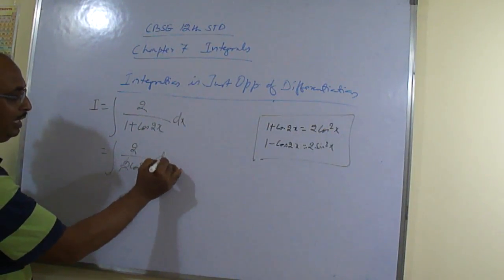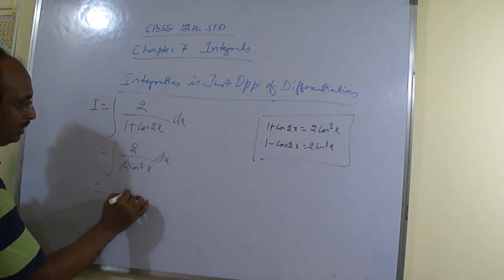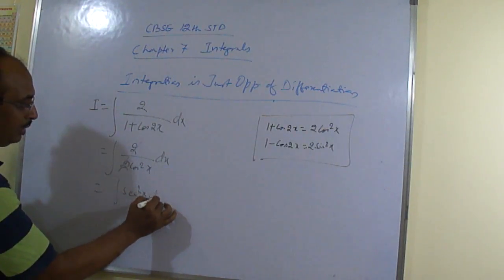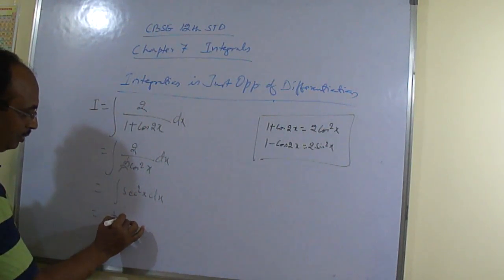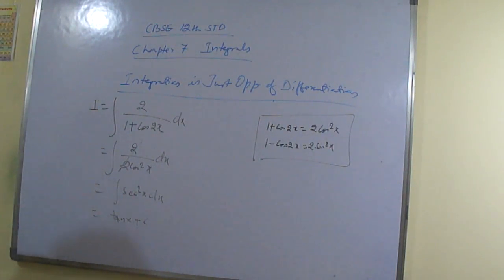So, here you can write 2 by 2 cos square x. Then, 2, 2 has got cancelled and dx. So, it has given you very easy question. So, is equal to? Tan. Tan x plus c. Right? Yes. Okay.